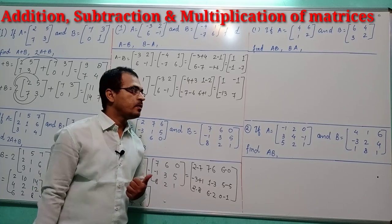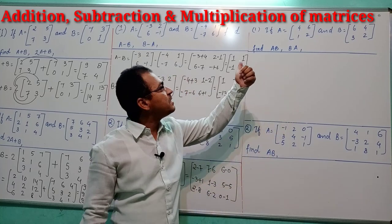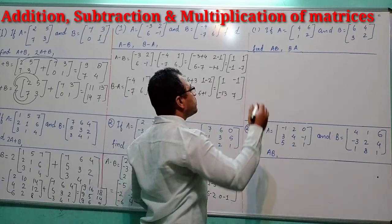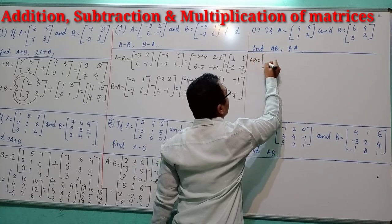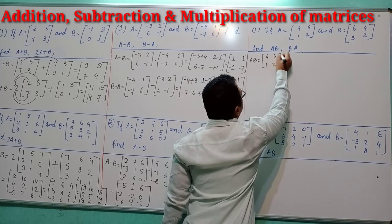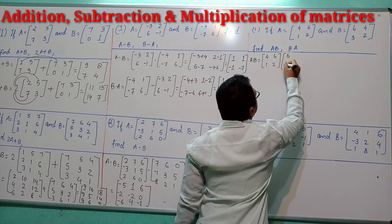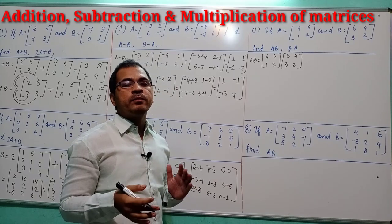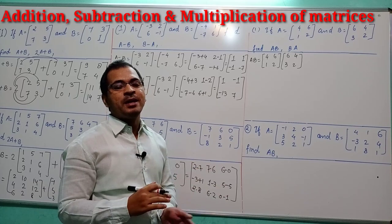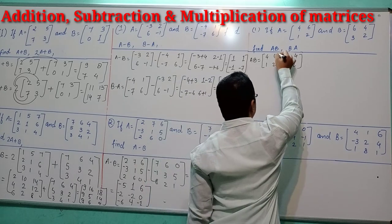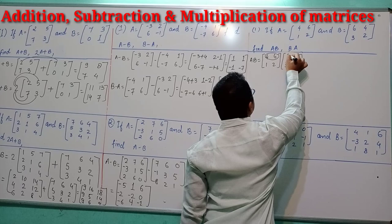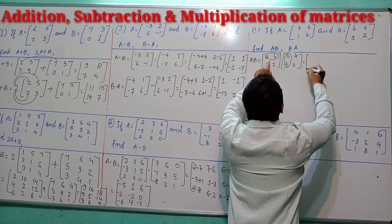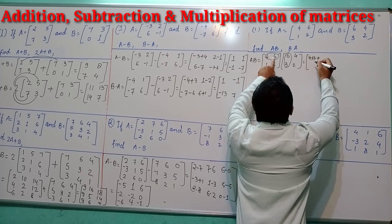Now moving to our third topic: multiplication of two matrices. In the first question, two matrices with dimension 2 by 2 are given and we have to find AB. Matrix A is [4, 1; 6, 2] and matrix B is [6, 3; 4, 2]. Whenever you multiply two matrices, you multiply the row of the first matrix by the column of the second matrix.